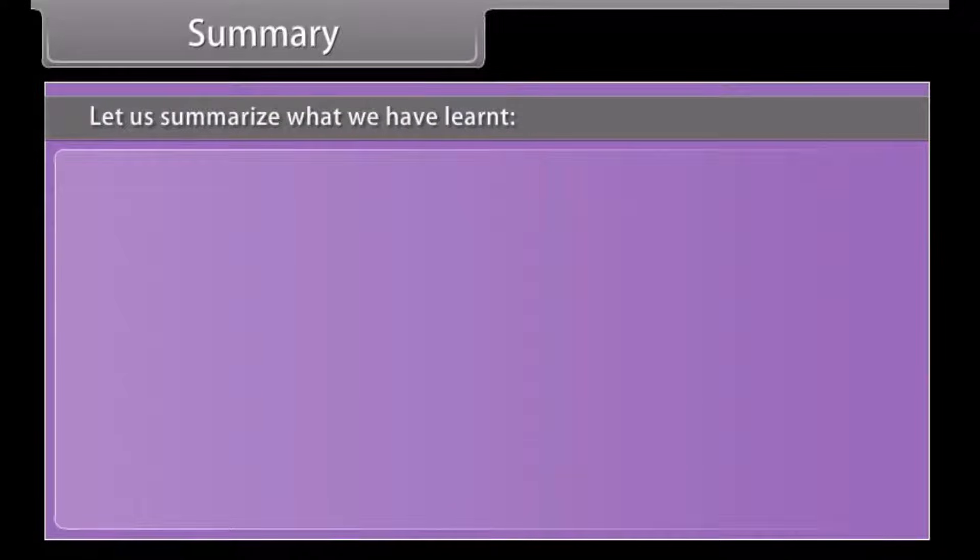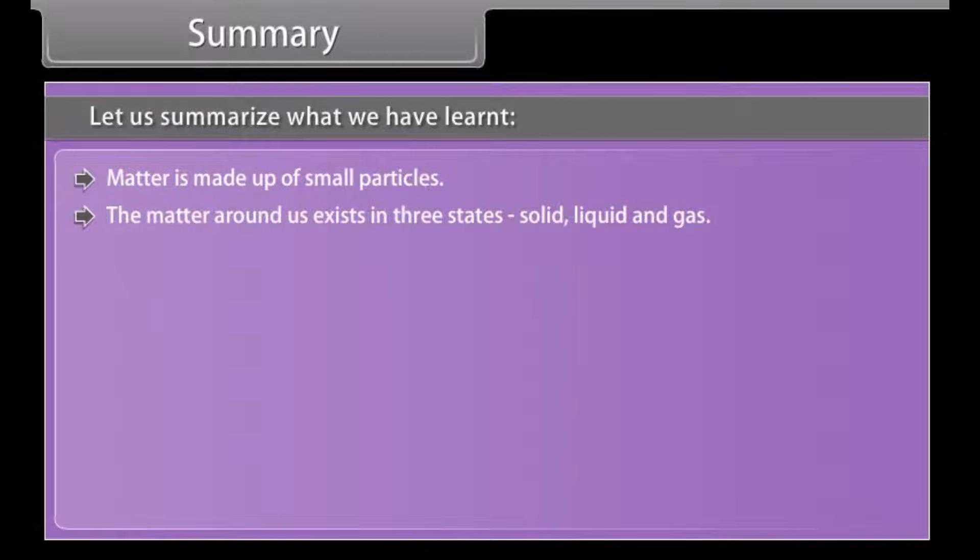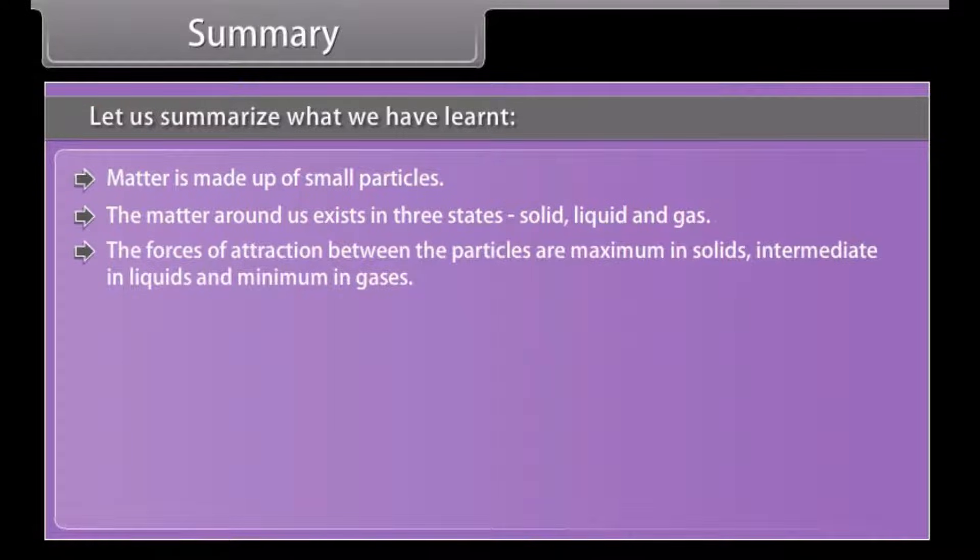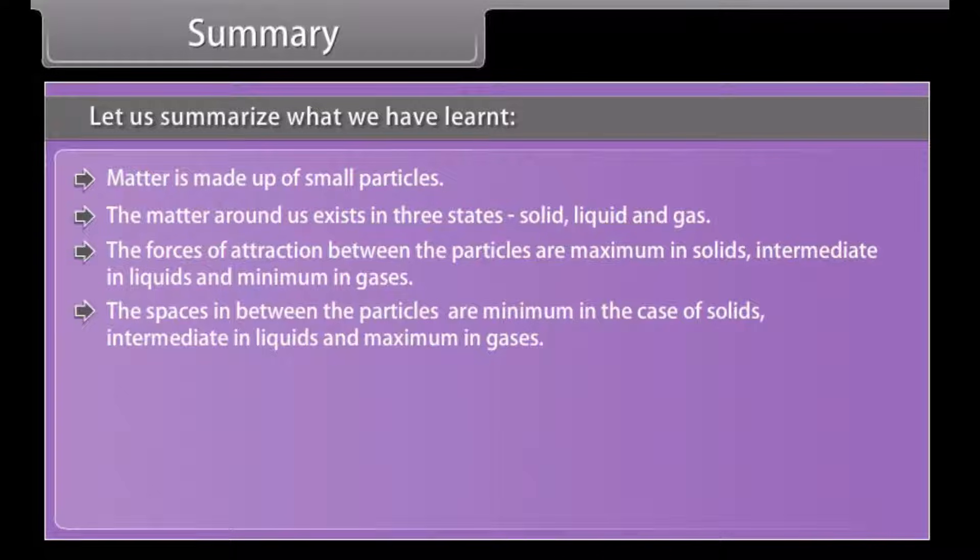Summary: Let us summarize what we have learnt. Matter is made up of small particles. The matter around us exists in three states: solid, liquid and gas. The forces of attraction between the particles are maximum in solids, intermediate in liquids and minimum in gases. The spaces in between the particles are minimum in the case of solids, intermediate in liquids and maximum in gases.